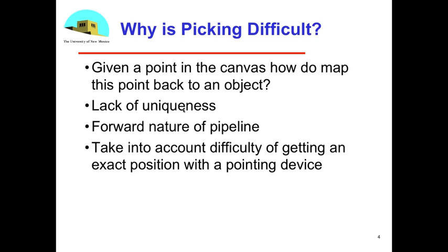There's also an issue of uniqueness just being given a position on the display. There may be multiple objects that all render to that point, and so we have to be a little careful about which object we want. Generally, we're going to want the one that's closest to the viewer and the one that if we're doing hidden surface removal is the one we'll see.